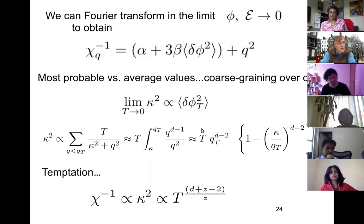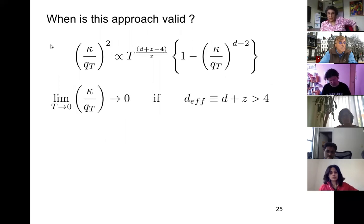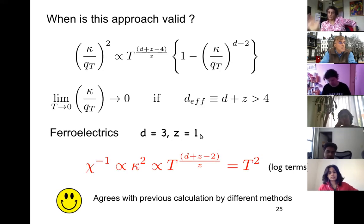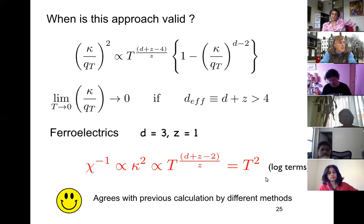The temptation is just to throw out the kappa term and say kappa squared goes like T to the D plus Z minus two over Z, because q_T goes as T to the one over Z. When can I do that? I can rearrange to show that the limit of kappa over q_T goes to zero — so I'm safe as T goes to zero — if the effective dimension D effective equals D plus Z is greater than four. In a ferroelectric, D equals three and Z equals one, we're in the marginal dimension, and the inverse susceptibility goes like kappa squared, which gives T to the D plus Z minus two, giving T squared. There'll be log terms also, but this recovers Rechester's result — agreeing with the previous calculation by different methods.